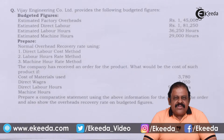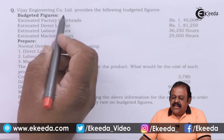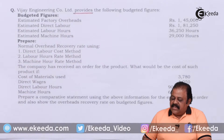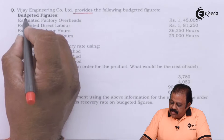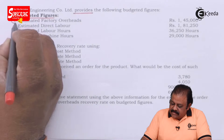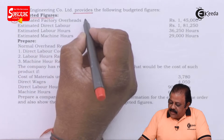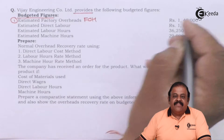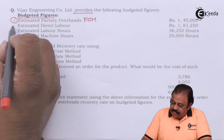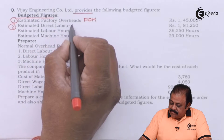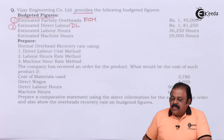Let us read the question. Vijay Engineering Company Limited provides the following budgeted figures: estimated factory overheads 1,45,000 and estimated direct labor 1,81,250.